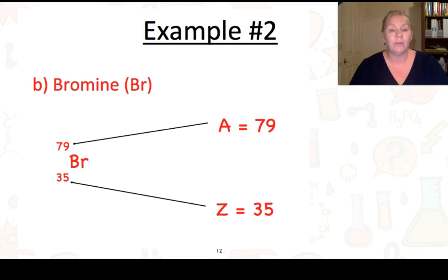We have a second example, bromine. Bromine symbol is Br. Atomic number of 35, mass number of 79.